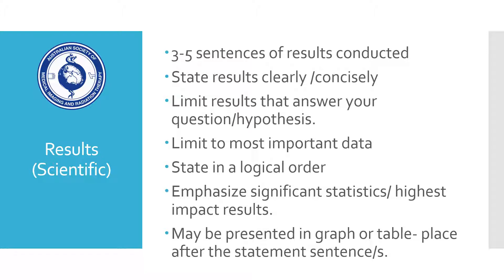The results section also applies to scientific abstracts. This section should consist of three to five sentences that concisely state the results from your study, limited to those that specifically answer the question, hypothesis, or aim stated in the background. It is important to limit this to the most important data that will have the most impact on your reader, stated in a logical order that follows your methods. If the abstract guidelines permit a graph or table, these should be placed after the statement sentences regarding them.